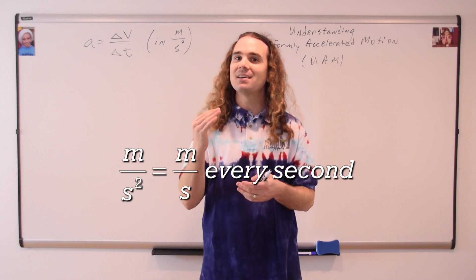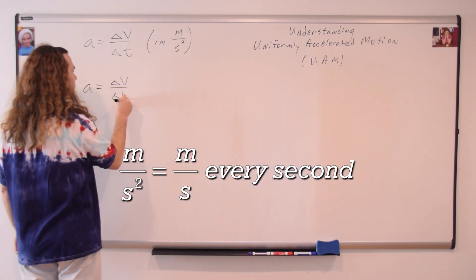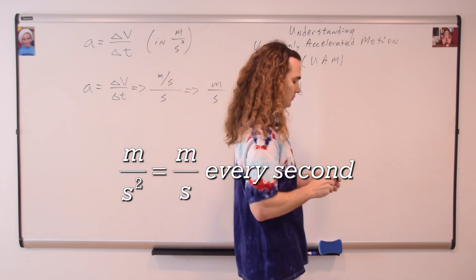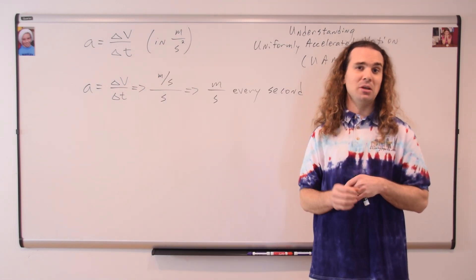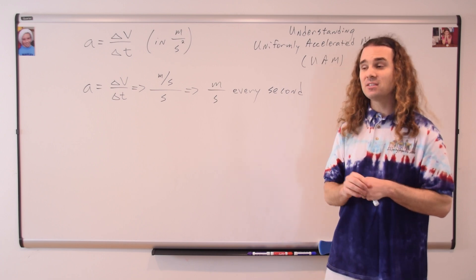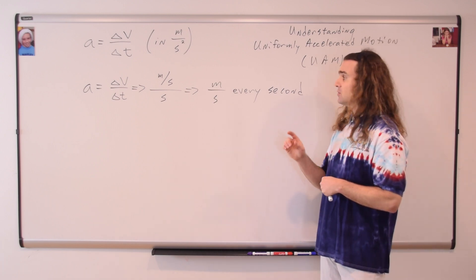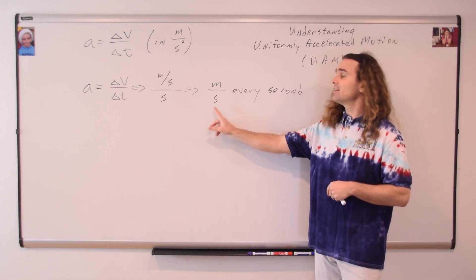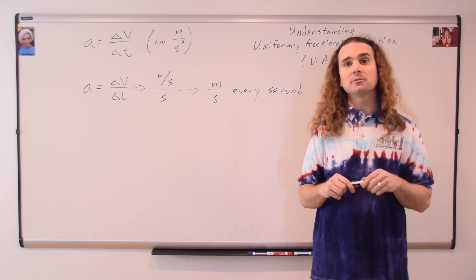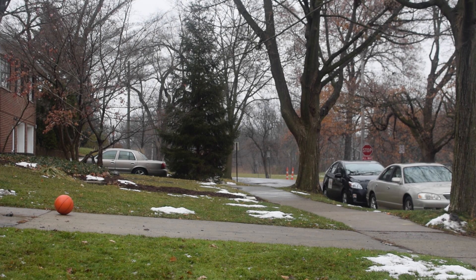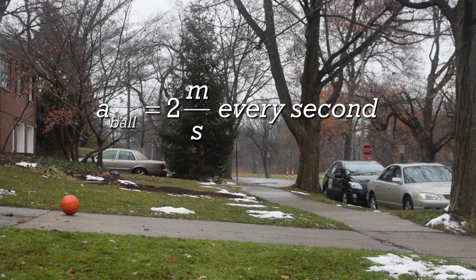Meters per second every second. In other words, if the acceleration of an object is a constant 10 meters per second squared, that means the velocity of that object is changing by 10 meters per second every second. Let's take a look at a simple demonstration. This is a basketball accelerating down an incline. In order to make the numbers easy, let's pretend the ball has an acceleration of two meters per second every second.